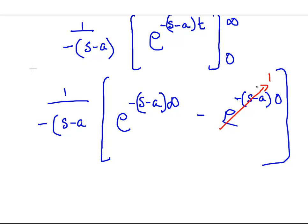But what about e^(-(s-a)∞)? This is a limits question. The limit of this as t goes to infinity is 0. e^(-∞) is essentially 0.